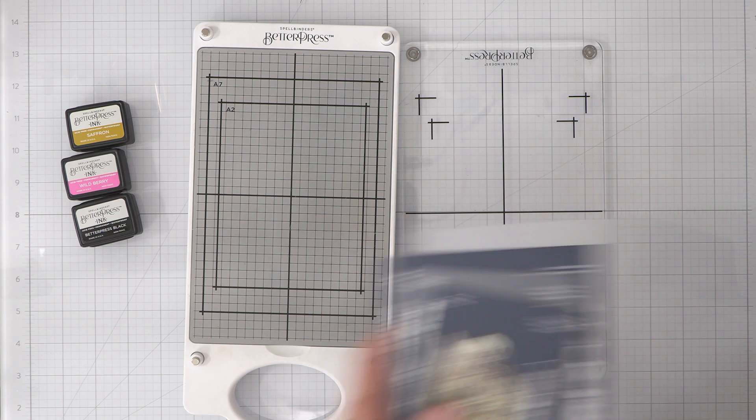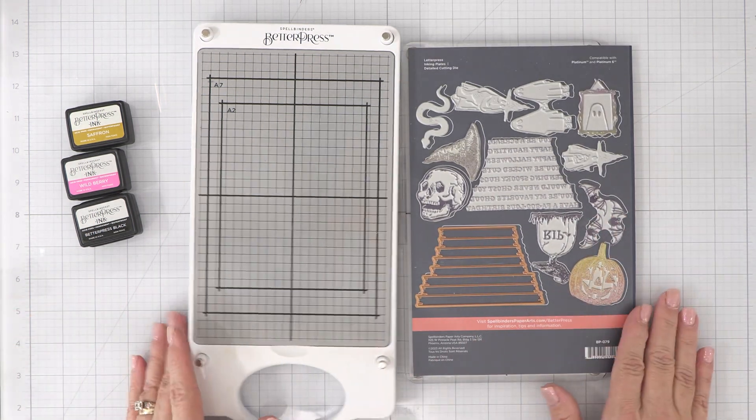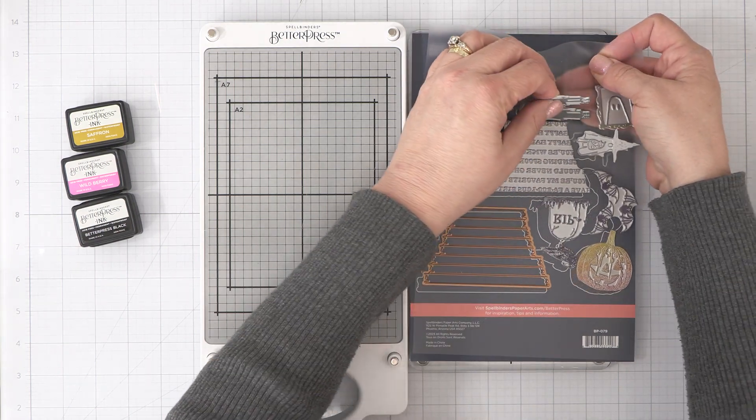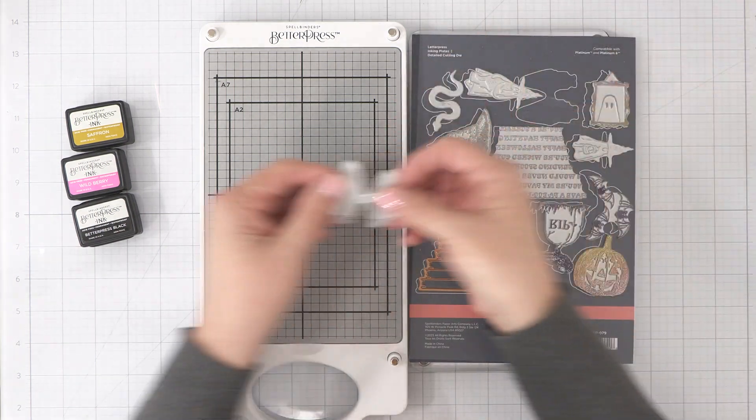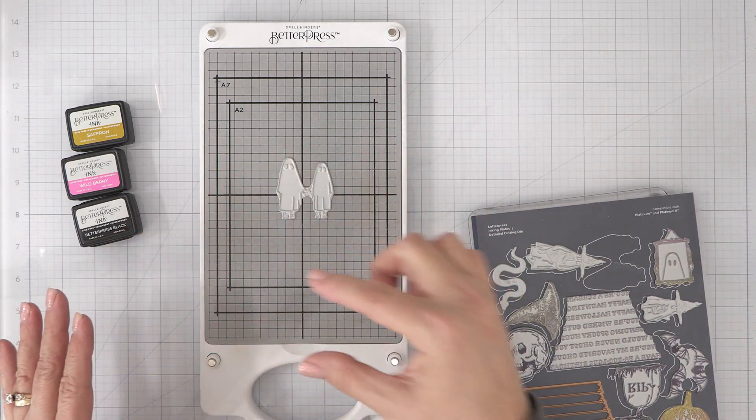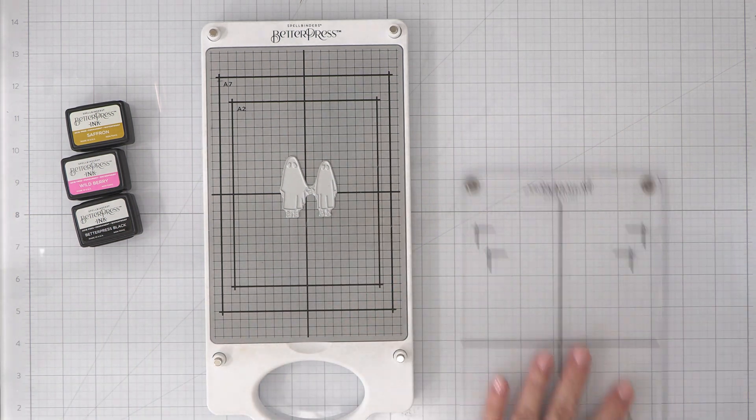So the inks I'm going to be using are going to be Wild Berry, Black, and Saffron. These are Better Press Letterpress inks that I have and we're just going to go ahead and jump into this now. So we're going to get started with these two adorable ghosts and I want to do a pattern with them on my A2 card base.